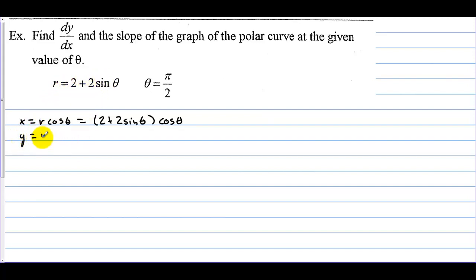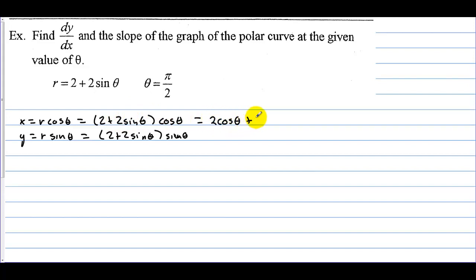Y is equal to R sine theta, which is equal to 2 plus 2 sine theta times sine theta. In order to take the derivative, we could do the product rule, but let's distribute cosine through. We have 2 cosine of theta plus 2 sine theta cosine theta. For y, distributing gives 2 sine theta plus 2 sine squared theta.